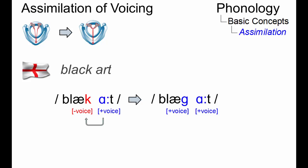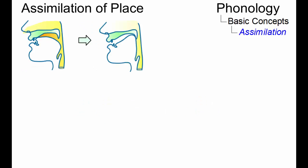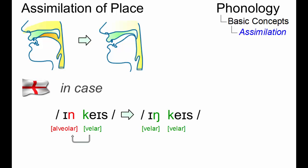In phenomena of place assimilation, two phonemes become alike in terms of their place of articulation. In the example in case, the alveolar nasal of in changes to a velar nasal under the influence of the initial velar plosive of case.